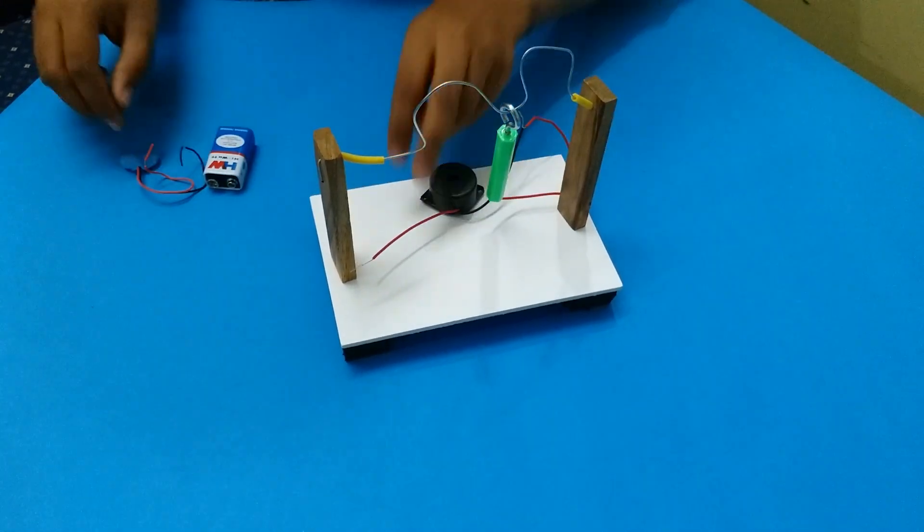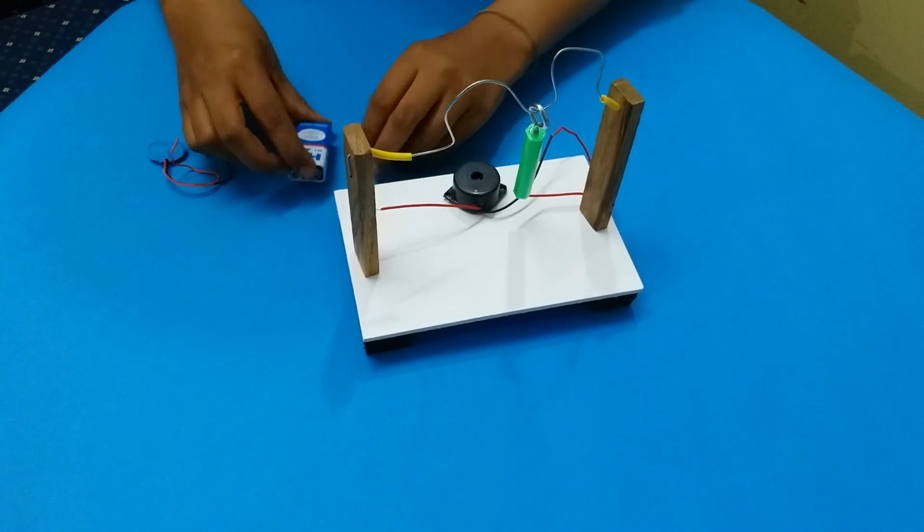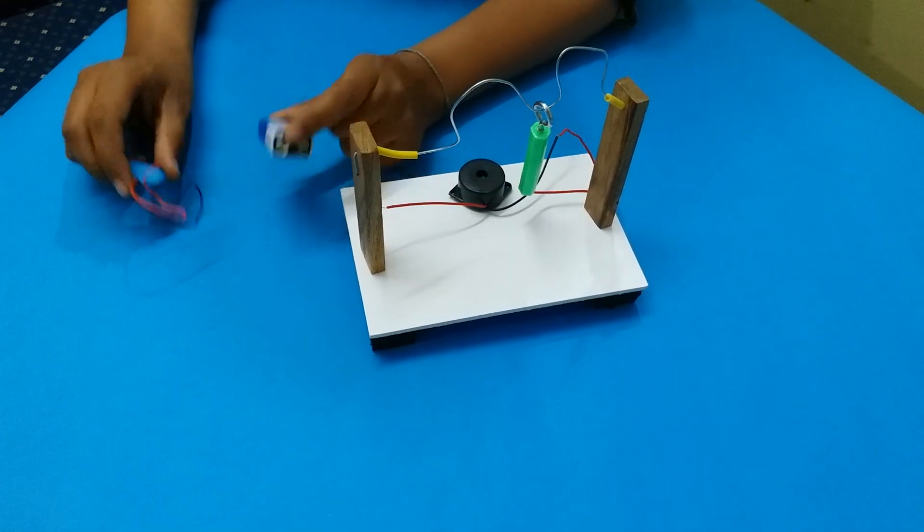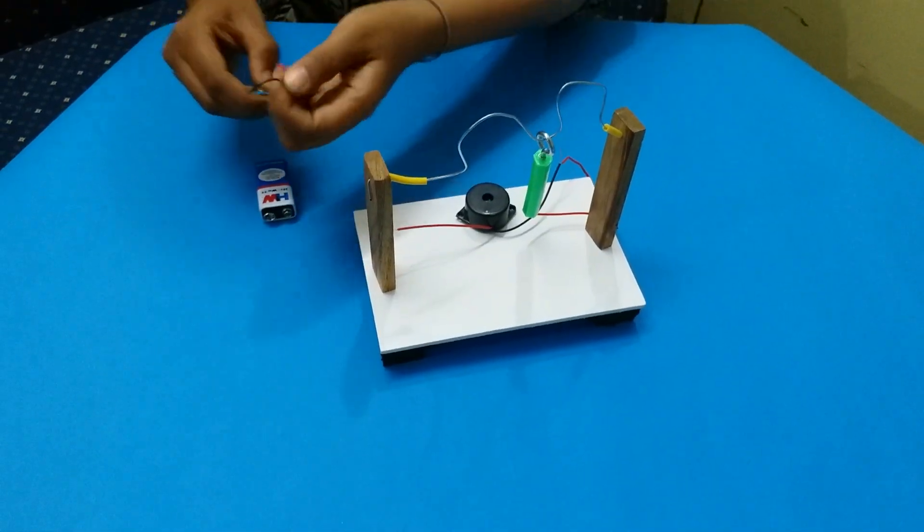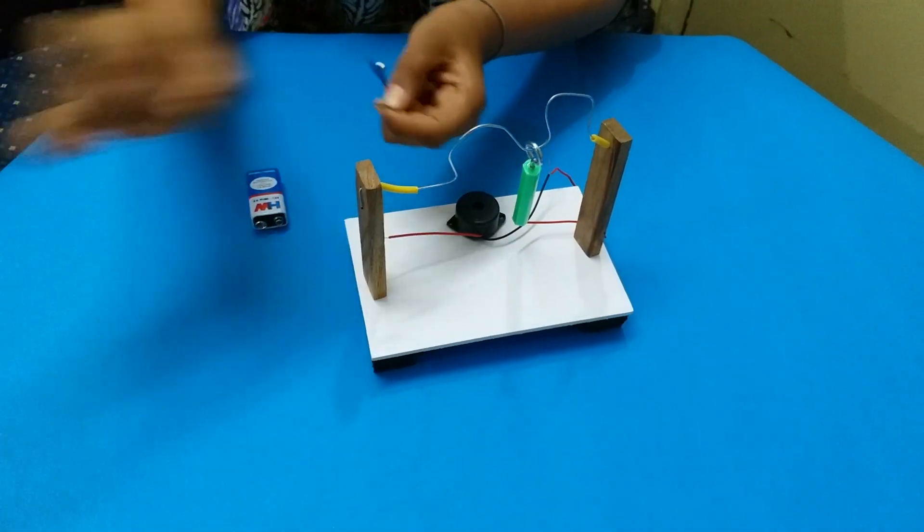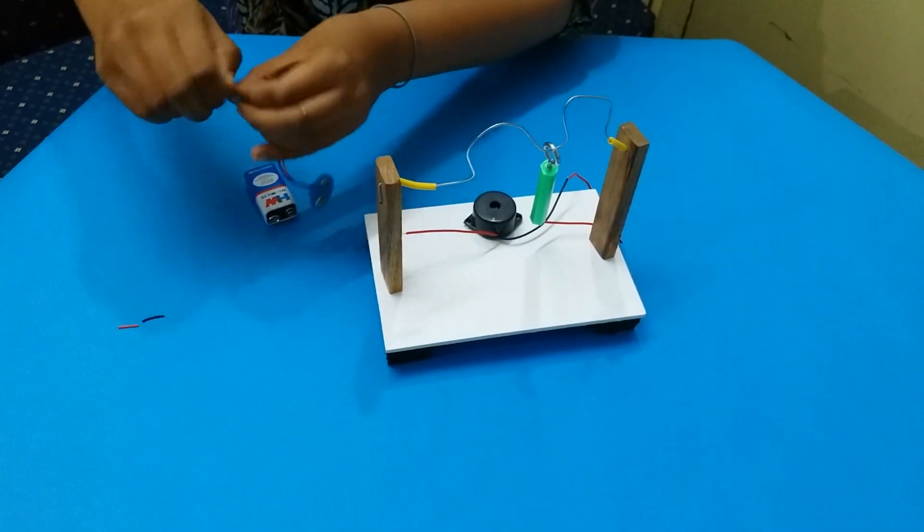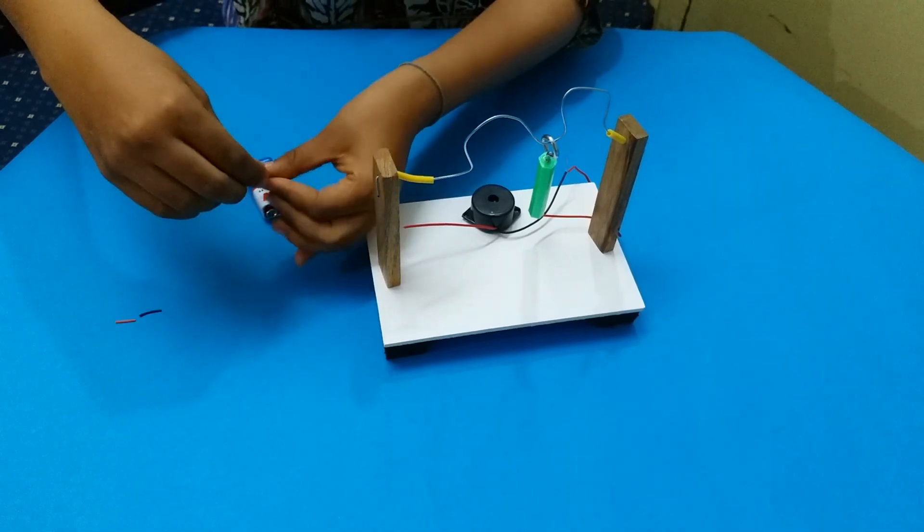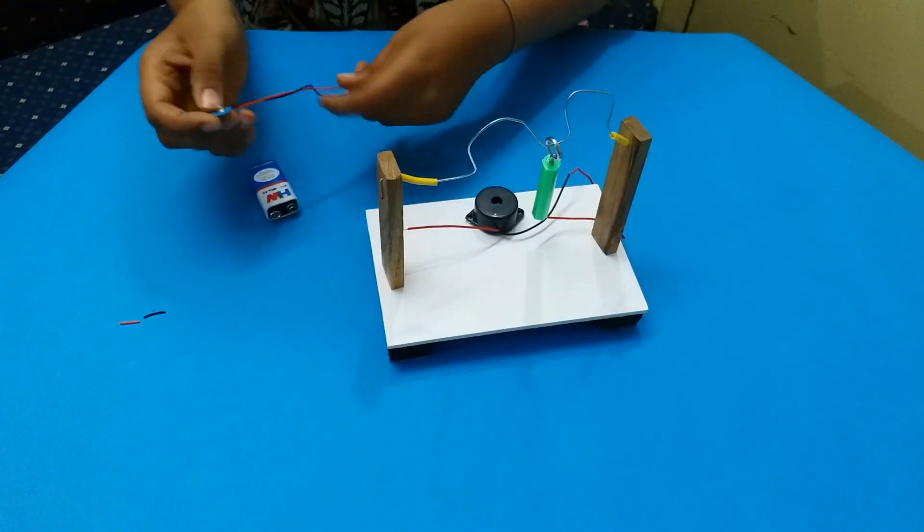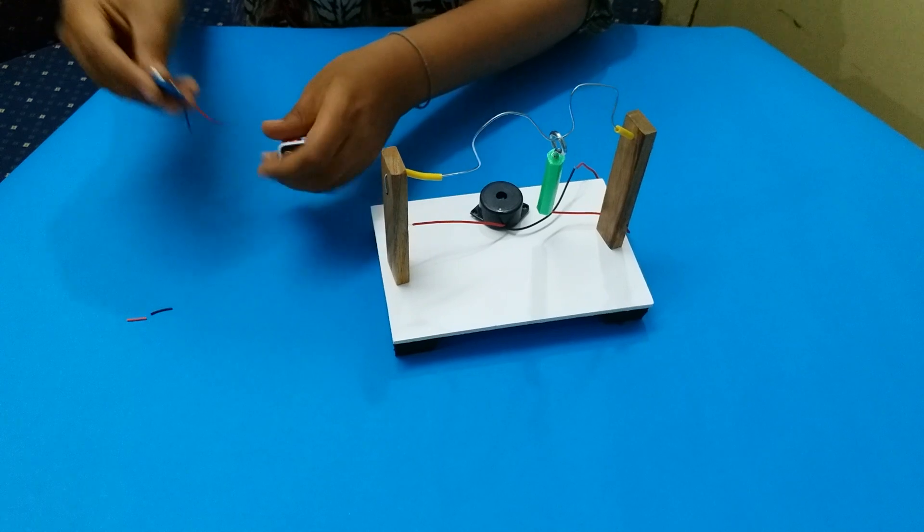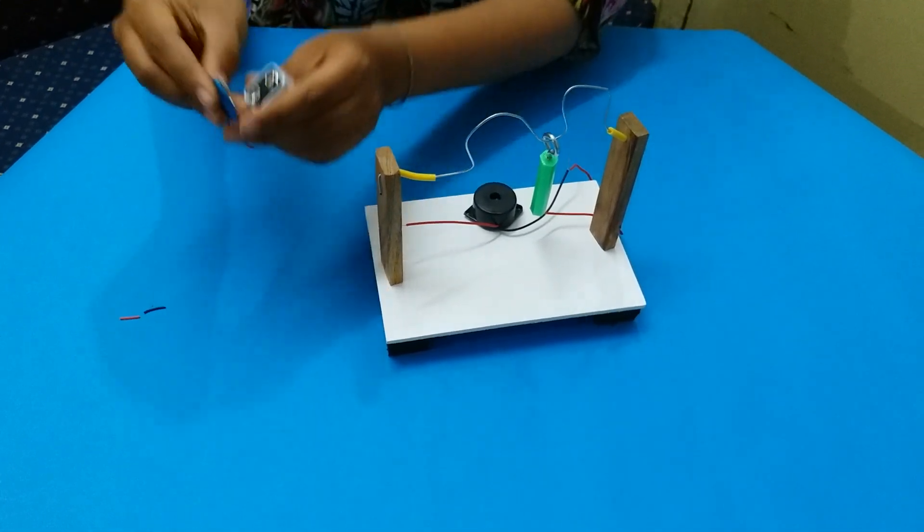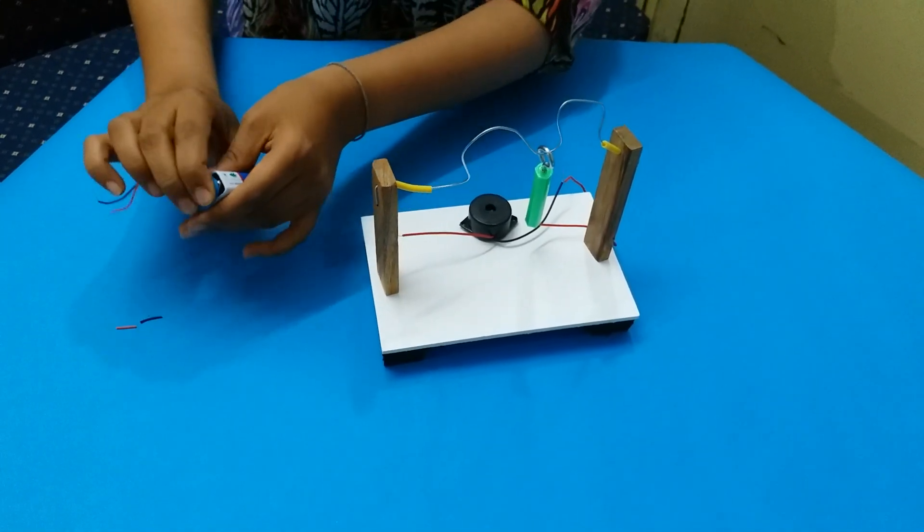Take a nine volt battery. It is not included in the kit. Take the snapper, remove the insulation of the wires and twist it in the same way as we have done before. Fix the snapper on the battery.